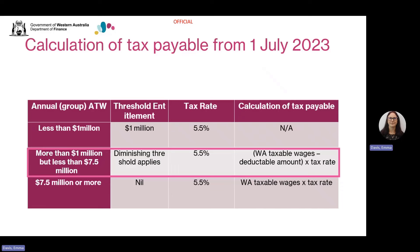WA uses a diminishing threshold method. This means the tax-free threshold gradually phases out for employers or groups of employers with annual taxable wages in Australia between $1 million and $7.5 million. The deductible amount is calculated using a tapering value formula, and employers in this tier pay tax at a rate of 5.5%. If your taxable wages are above the upper threshold amount of $7.5 million, then you don't receive any deductible amount and all wages are liable for payroll tax at 5.5%.